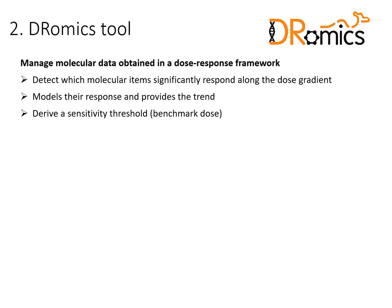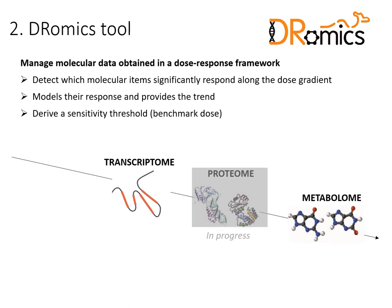We chose to work with the benchmark dose because it was recommended by the EFSA for molecular data. For the moment, the tool handles transcriptomic data with microarray or RNA-seq, and metabolomic data. But soon it will also handle proteomic data. As we are also integrating all levels together, DROMIX is now also able to handle apical data. The idea is to have one tool able to deal with different biological response levels.